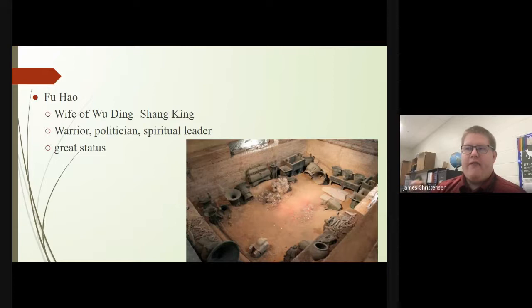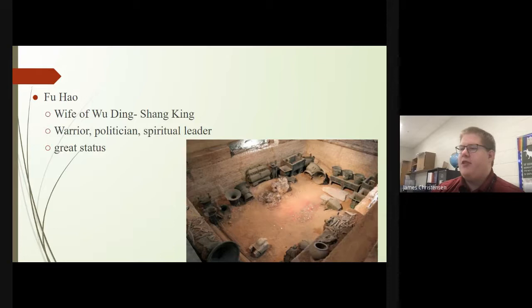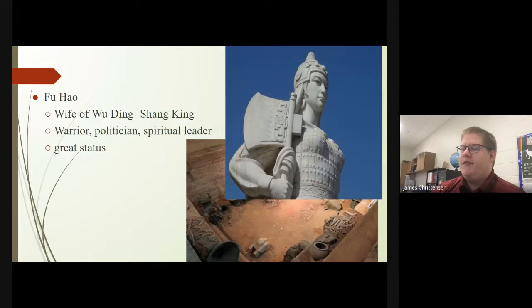We have Fu Hao, the wife of Wu Ding, a Shang king. She was a warrior, politician, and spiritual leader who maintained great status. This image on screen is that of her tomb, containing various urns and items for her to have in the afterlife. Here's a statue of her — she was believed to be one of the strongest female warriors of ancient China. If you love Disney, part of her story is what inspired Mulan.